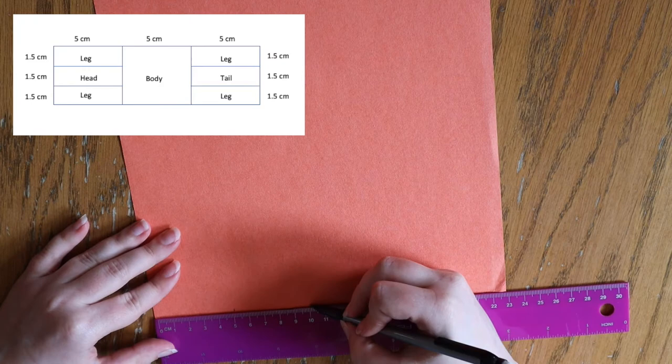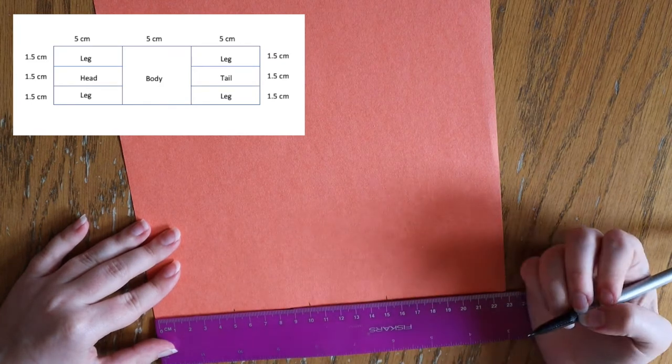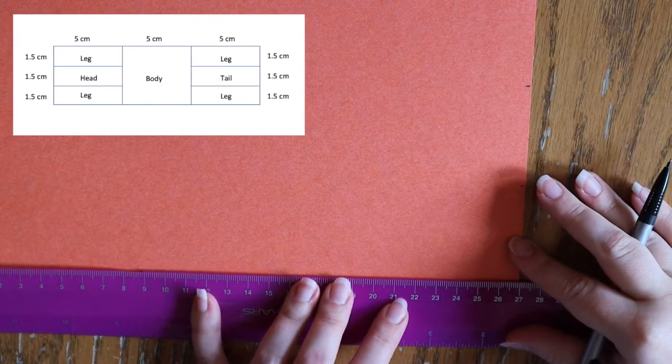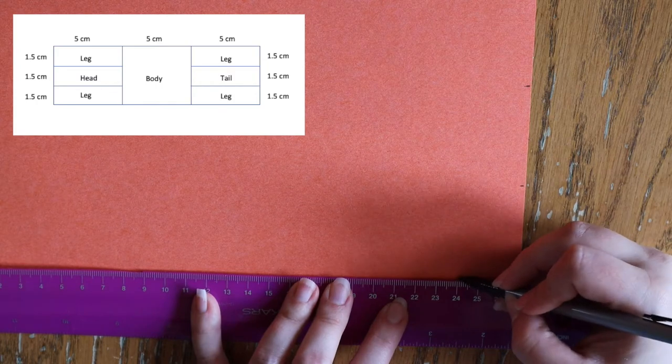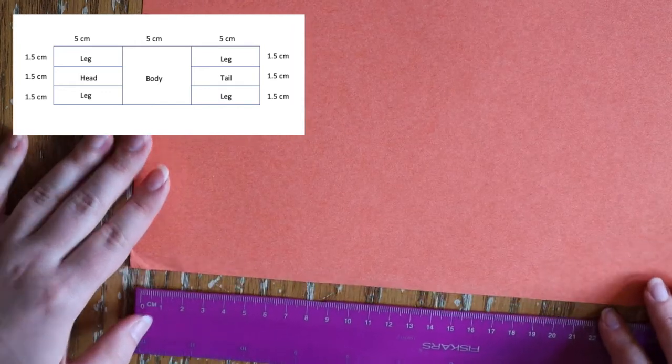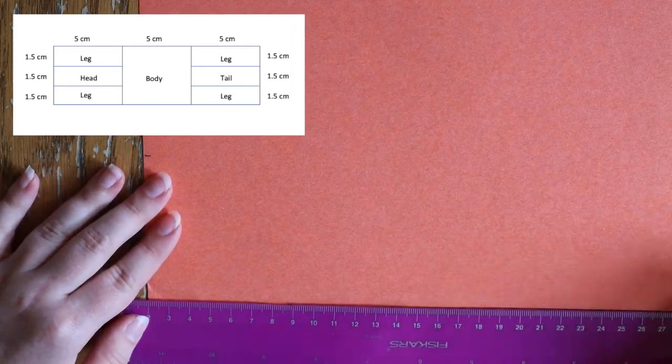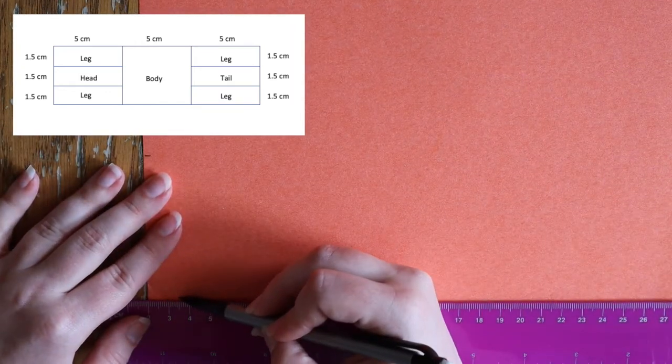Begin the horse by drawing a rectangle with the specified dimensions, 15 cm long and 4.5 cm high. As you mark out your 15 cm in length, you can divide this space into three equal sections that are 5 cm long each.